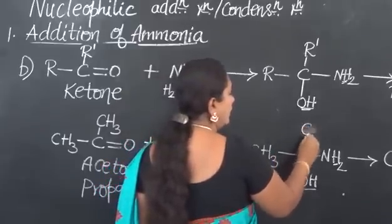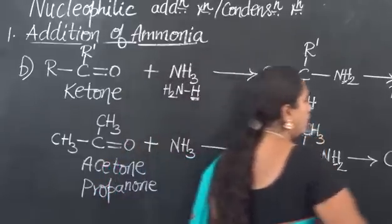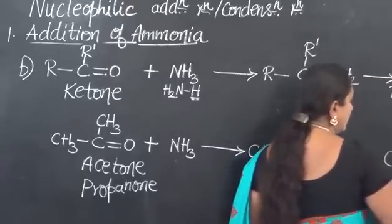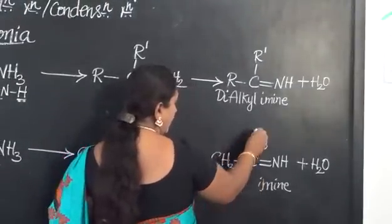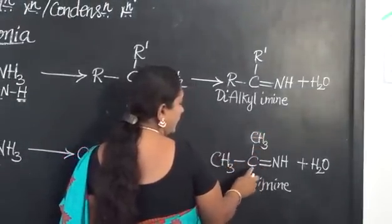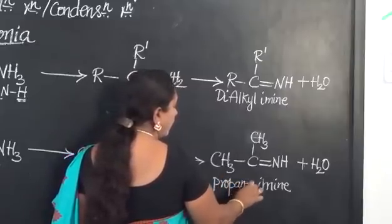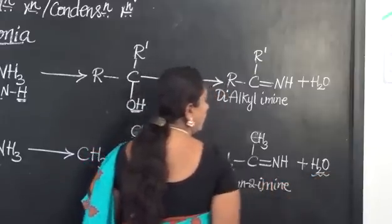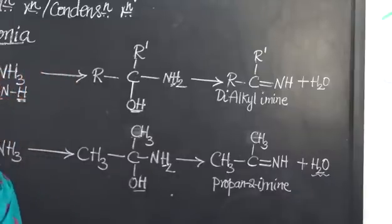So, it will form an intermediate addition product which will lose a molecule of water later on. And the name of this compound is, this will be our parent chain and this will be the second carbon atom. So, therefore, we can call this as propan-2-imine where there is elimination of water taking place. Therefore, the reaction is condensation reaction.